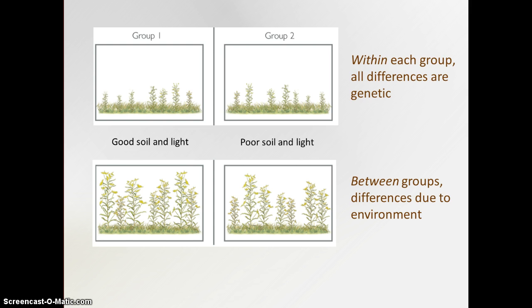And so this has very practical implications when we talk about group differences in human behaviors or human traits. A very common and often misunderstood example is intelligence. We know from research in the United States that African Americans tend to score lower, as a group, on IQ tests compared to whites. And we also know from research that intelligence appears to have fairly high heritability. So people will sometimes say, oh, well that proves that IQ is genetic and therefore if blacks score lower, then they must be less intelligent. But that's actually not a fair interpretation of the data.